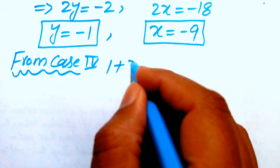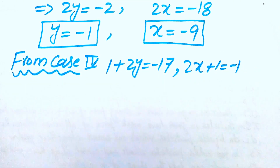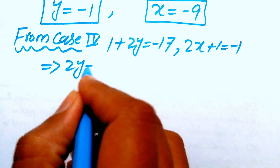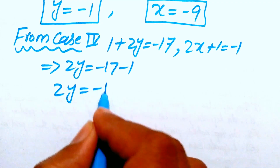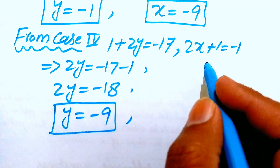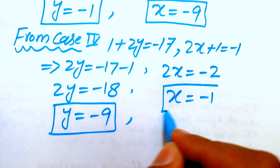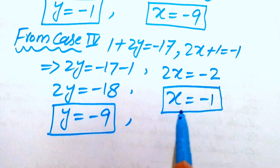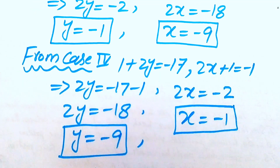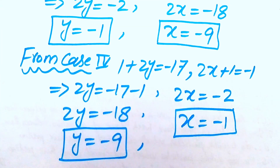Solving Case 4: from (1+2y)=−17, moving 1 to the right gives 2y=−18, so y=−9. From (2x+1)=−1, moving 1 to the right gives 2x=−2, so x=−1. In Case 4, x equals −1 and y equals −9. These are all four solution pairs, and that is the final answer. Thank you for watching — please subscribe to my channel for more exciting videos.